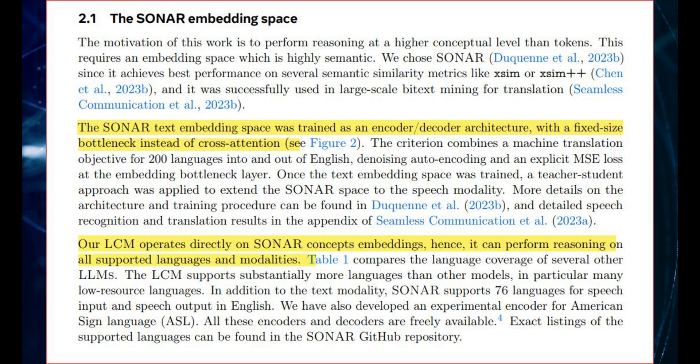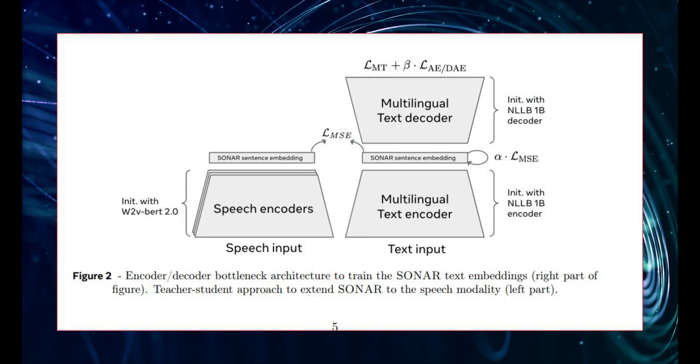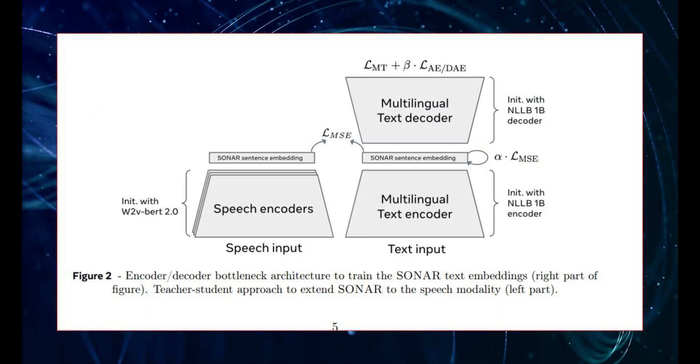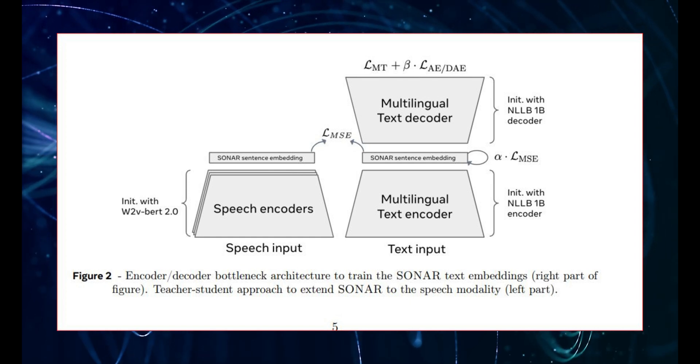So, the LCM takes these sentence embeddings, and it learns to predict the next sentence in a sequence. But it's doing it in this abstract concept space. It's not just predicting words. And then, there's this other part of the system called the concept decoder. And it takes that predicted concept, the numerical representation of the next sentence's meaning, and it turns it back into actual text.